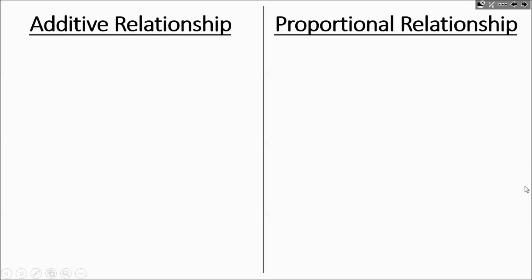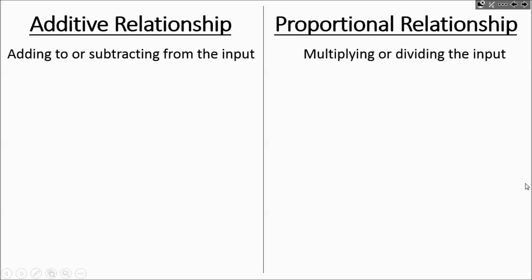Additive relationships are when you're adding to or subtracting from the input, the input being the x value. Proportional relationships are when you're multiplying or dividing the input. Here are some examples with equations: two unknowns where you're adding four to the input, and two unknowns where you're multiplying the input by four.